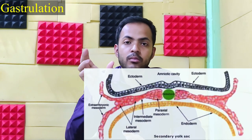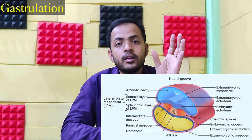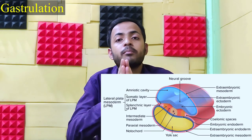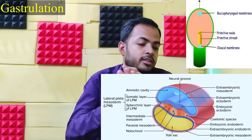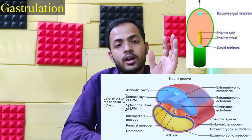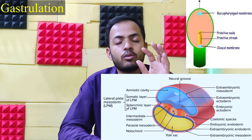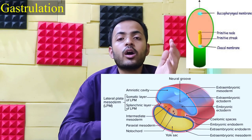Among these three germ layers, only the mesoderm is extremely active. At the cephalic end and the caudal end, the mesoderm — along with ectoderm and endoderm — forms a bilaminar disc, which is a circular disc formation. The disc at the cephalic end ultimately forms the buccopharyngeal membrane, and at the caudal end it forms the cloacal membrane. That covers part A, and in my next video I will talk about part B — so till then, bye.